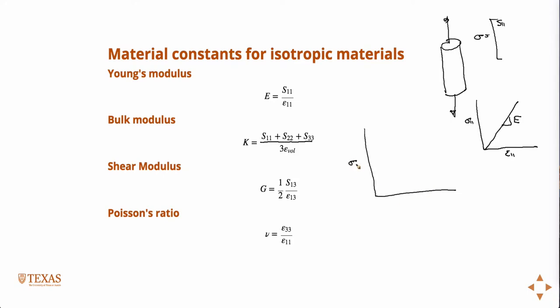If you plotted that for a linear elastic material, it would be the slope of a straight line. This is H, hydrostatic, which is defined as one-third the trace of the stress tensor.